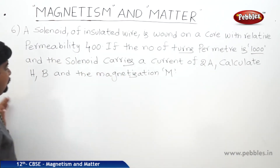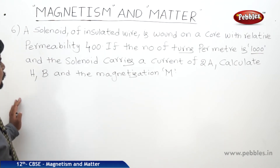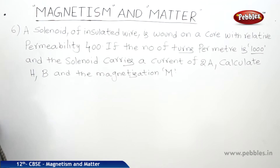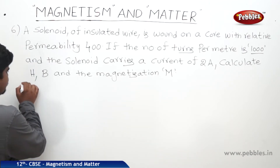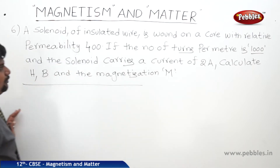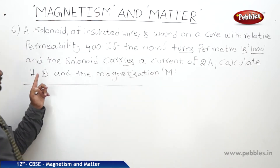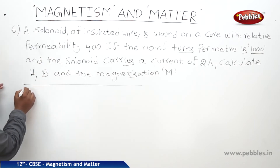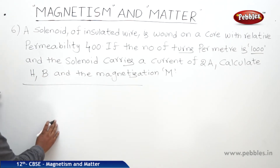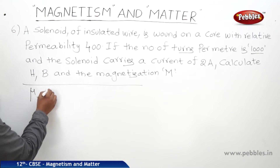This next problem is related to relative permeability and the quantities M, B, and H. A solenoid of insulated wire is wound on a core with relative permeability mu_R = 400.